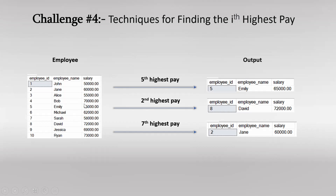The left table is the employee table where we have details about employees and their salary. On the right side, you can observe the fifth highest salary, second highest salary, and seventh highest salary. These numbers can be replaced by any number. We are going to create a dynamic query where we can replace the value of i with five, two, seven, or any other number. We will discuss two methods: first using window functions, and second using subqueries.